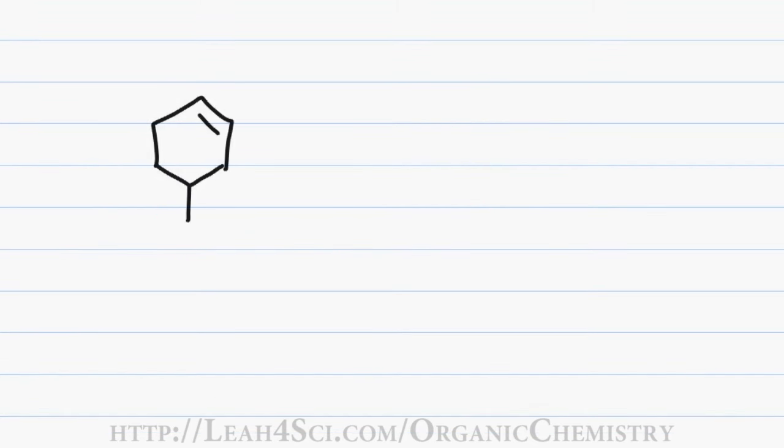When you have a ring with a pi bond and a substituent, the two carbons holding the pi bond get higher priority than an alkyl substituent. If I choose the top carbon to be number one, I am forced to continue clockwise so that the second sp2 carbon gets the number two.